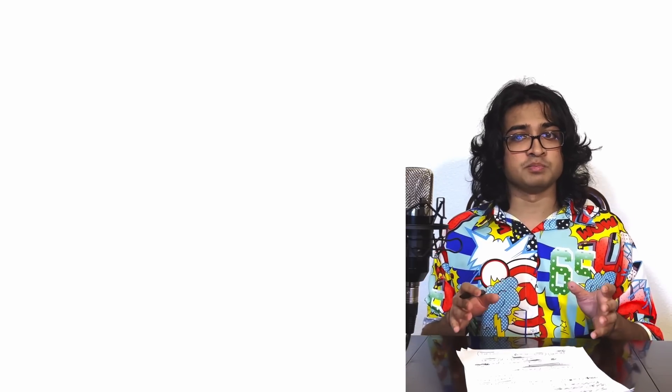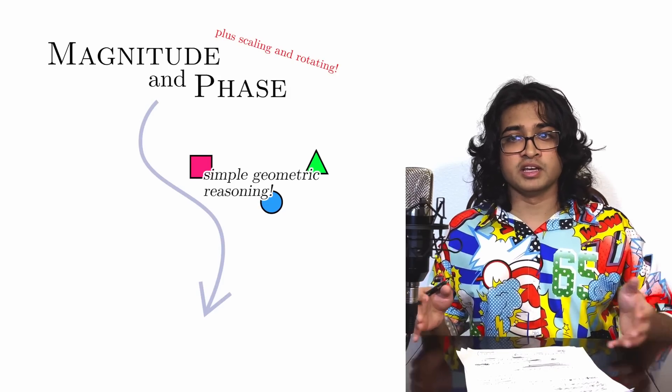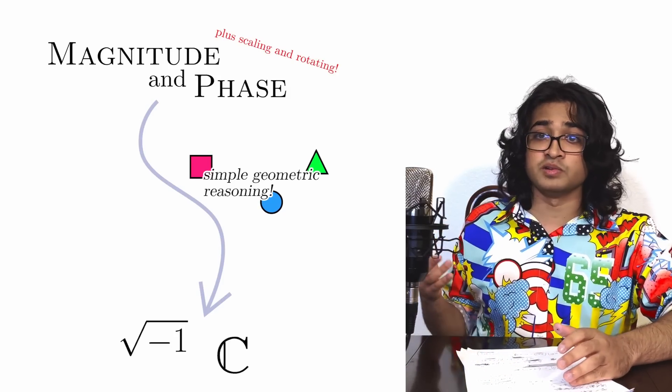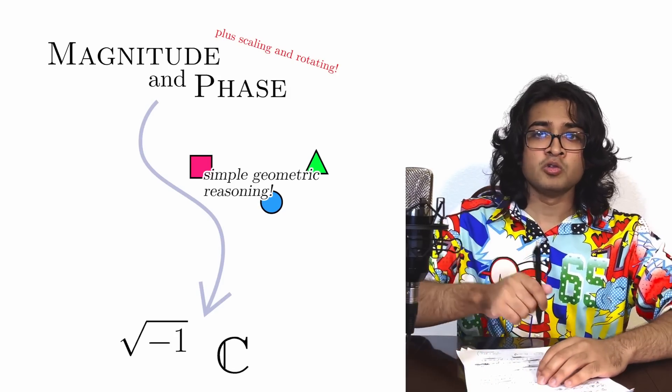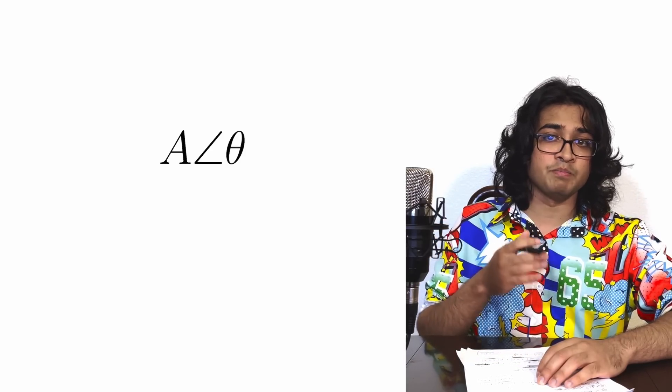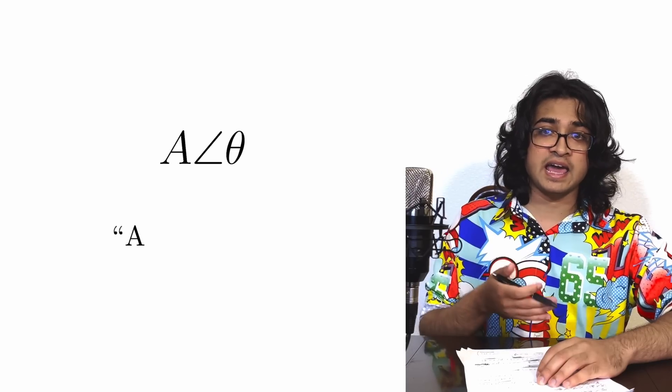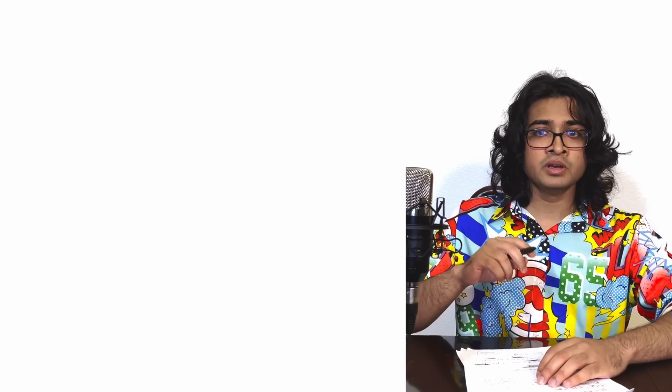We'll now prove to ourselves that magnitude and phase are the true fundamental properties of complex numbers. We'll start by assuming that we have some generic polar objects with these properties, and we'll see that this assumption, along with just some simple geometric reasoning, is all it takes to end up with the square root of negative 1. Real quick, we'll use this notation to denote a polar object with magnitude A and phase theta, and I'll pronounce it as A angle theta.